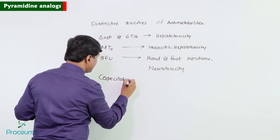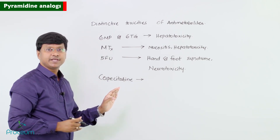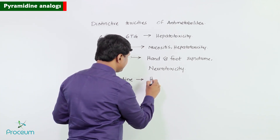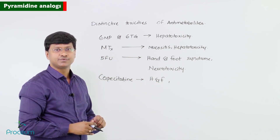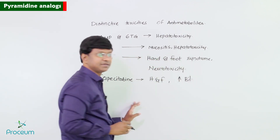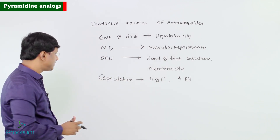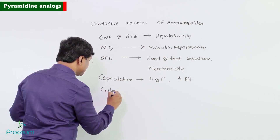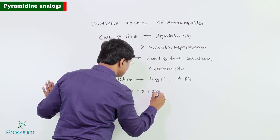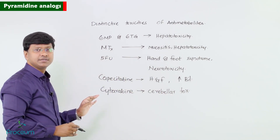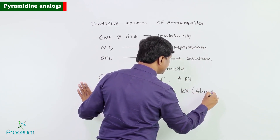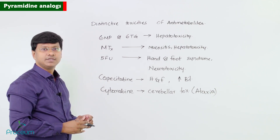Capecitabine will also cause hand and foot syndrome and will increase bilirubin levels — that is hyperbilirubinemia. Cytarabine is associated with cerebellar toxicity — specifically cerebellar ataxia, where there is imbalance while walking.